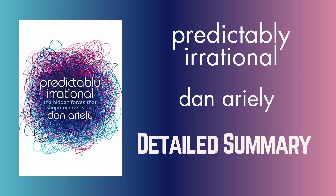Chapter 1: The Truth About Relativity – Why Everything is Relative, Even When It Shouldn't Be. Chapter 1 explores the idea that everything is relative, even when it shouldn't be. Ariely argues that we often make decisions based on how options compare to each other, rather than on their absolute value. The chapter begins with experiments demonstrating the power of relativity in decision-making. For example, participants were asked to choose between two types of beer, a premium brand and a budget brand. When the premium brand was presented alone, most participants chose it. However, when the budget brand was added as a third option, the majority still chose the premium brand, even though it was more expensive.